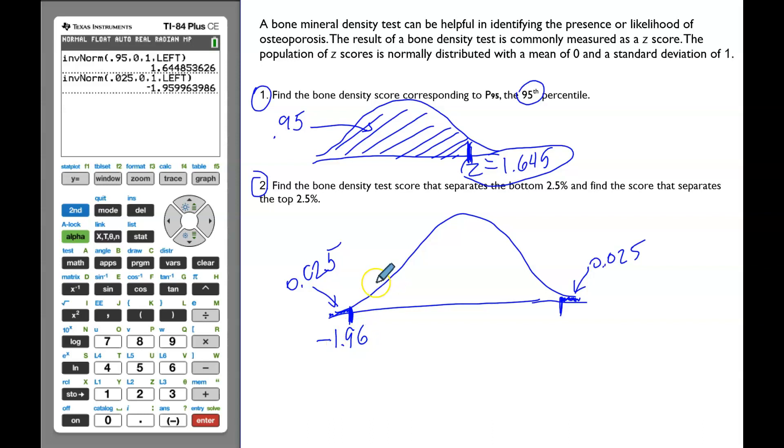Now, without calculating on the calculator, the z-score that separates the area of 0.025 to the right of that z-score, let's guess. Because the graph is symmetrical, we can guess that the z-score that separates 0.025 on the right will also be 1.96. But let's check on the calculator.